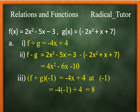f minus g which is 2x squared minus 5x minus 3 minus negative 2x squared plus x plus 7. 2x squared minus negative 2x squared is 4x squared. Negative 5x minus x which is negative 6x. Negative 3 minus 7 which is negative 10. So 4x squared minus 6x minus 10.